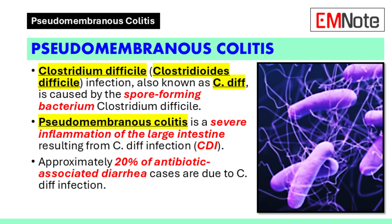Pseudomembranous colitis is a severe inflammation of the inner lining of the large intestine and often results from a serious Clostridium difficile infection. Clostridium difficile infection is an increasing issue in healthcare settings, and approximately 20% of antibiotic-associated diarrhea cases are attributed to it.